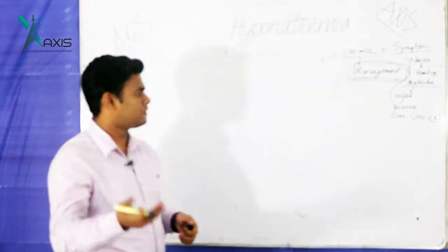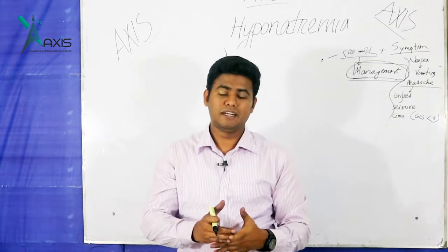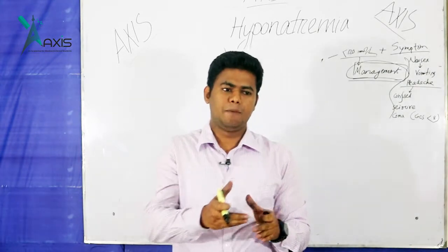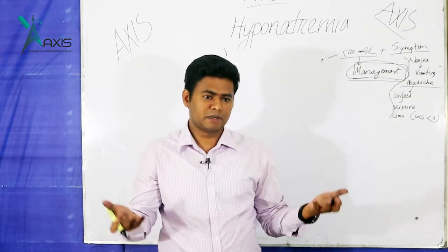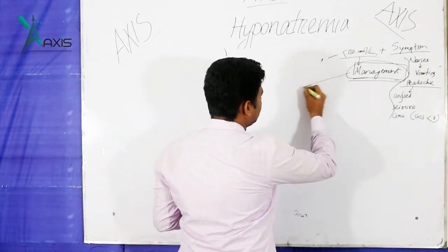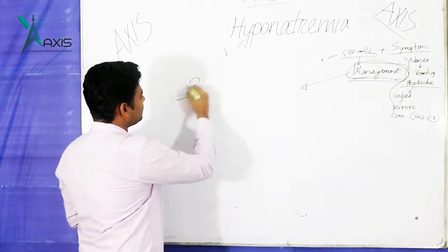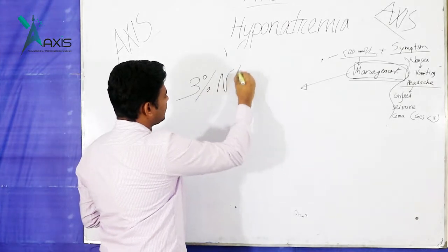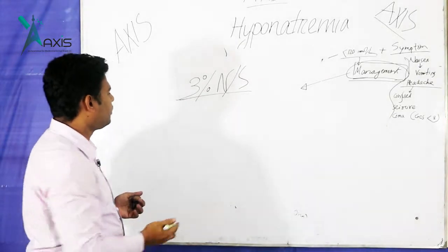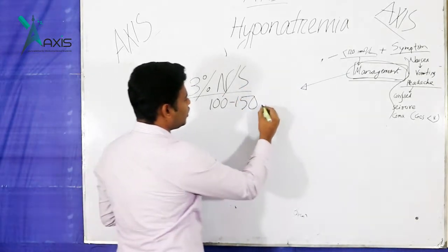When you have severe hyponatremia, you must do emergency management. We need to raise sodium levels urgently. We give 3% normal saline — hypertonic saline — as the treatment. Administer 100 ml of 3% normal saline over 10 minutes.